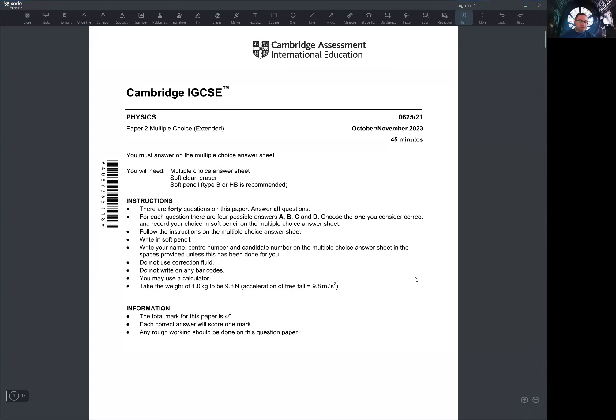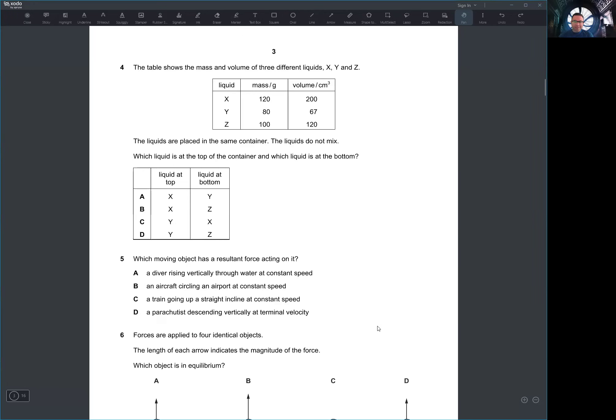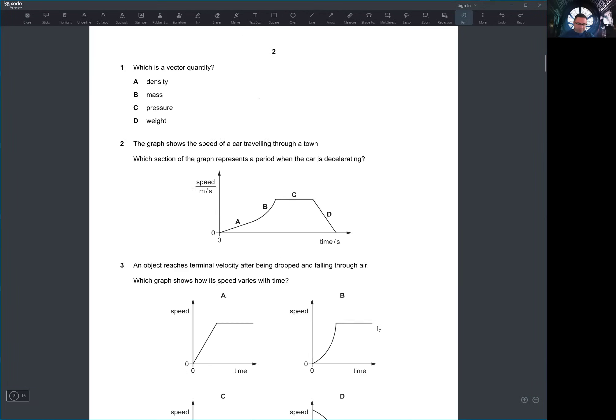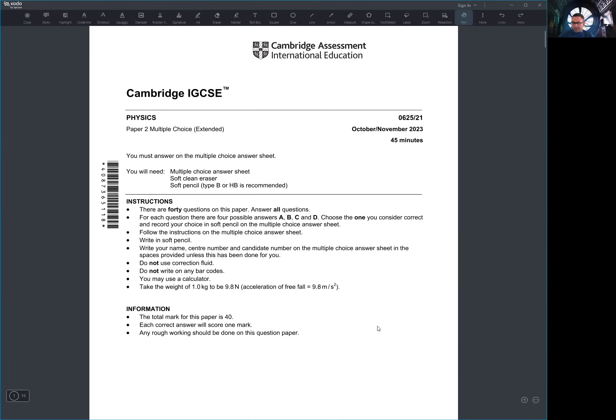So we want to talk about how do we solve Paper 2 IGCSE, like how do we solve multiple choice, how do we approach it. Is there anything special about it? We've talked about this before, but I'll mention these things again because to some people multiple choice is easy, and for others it's traumatizing. But in order to avoid any of these issues, how do we approach Paper 2?